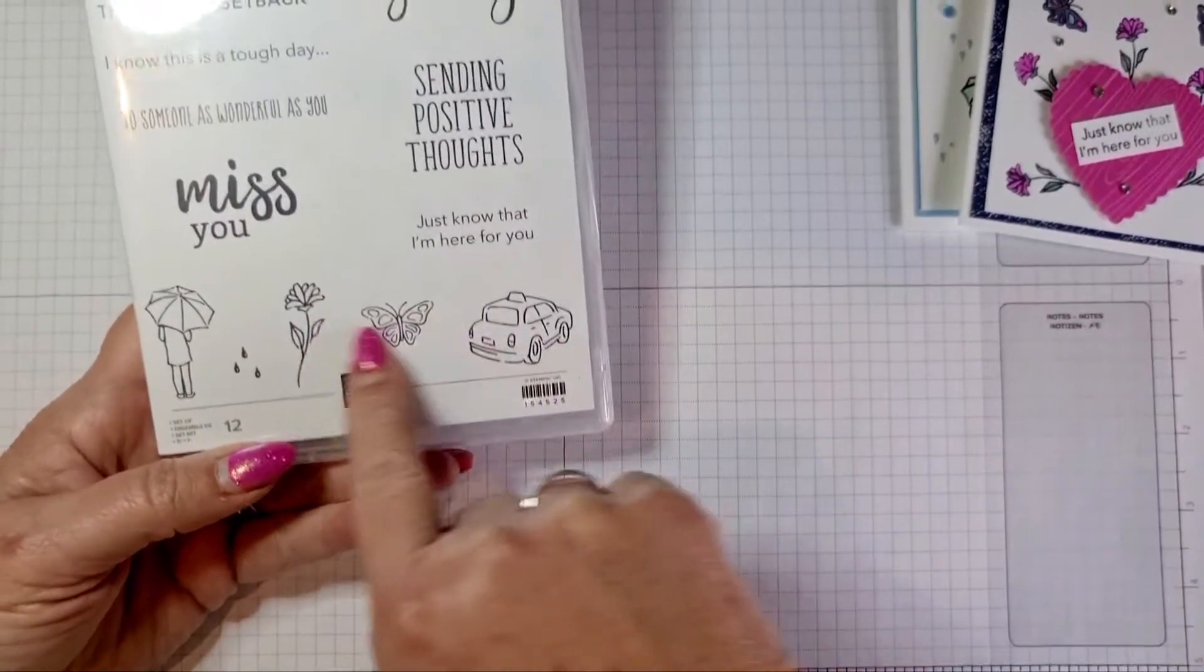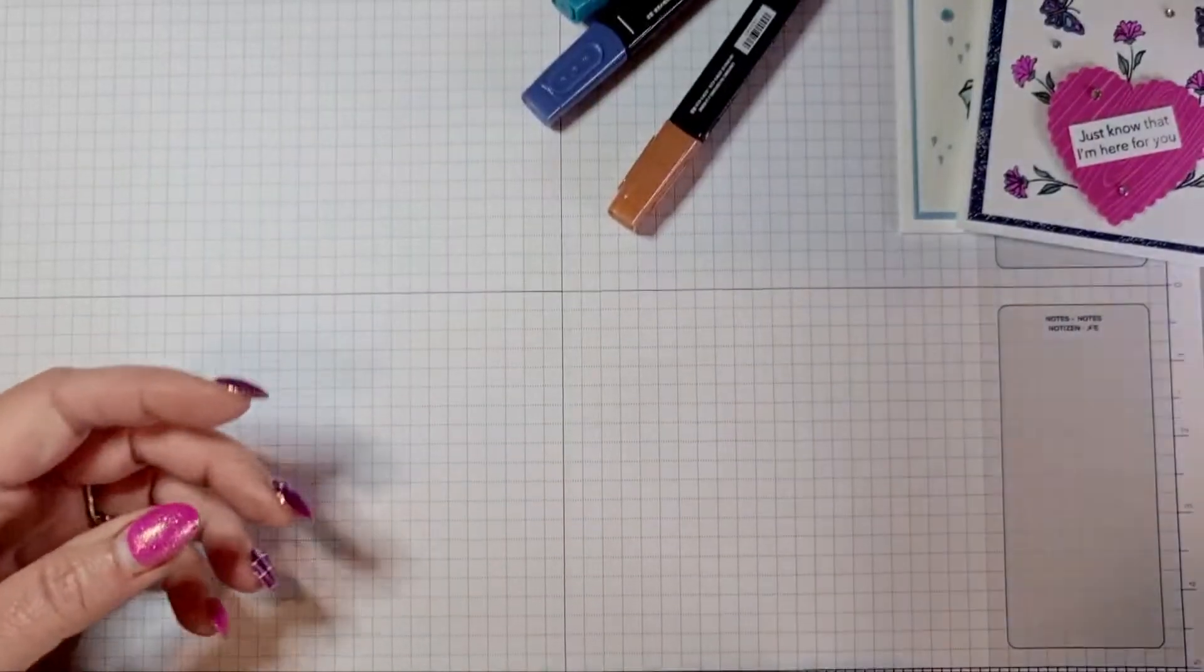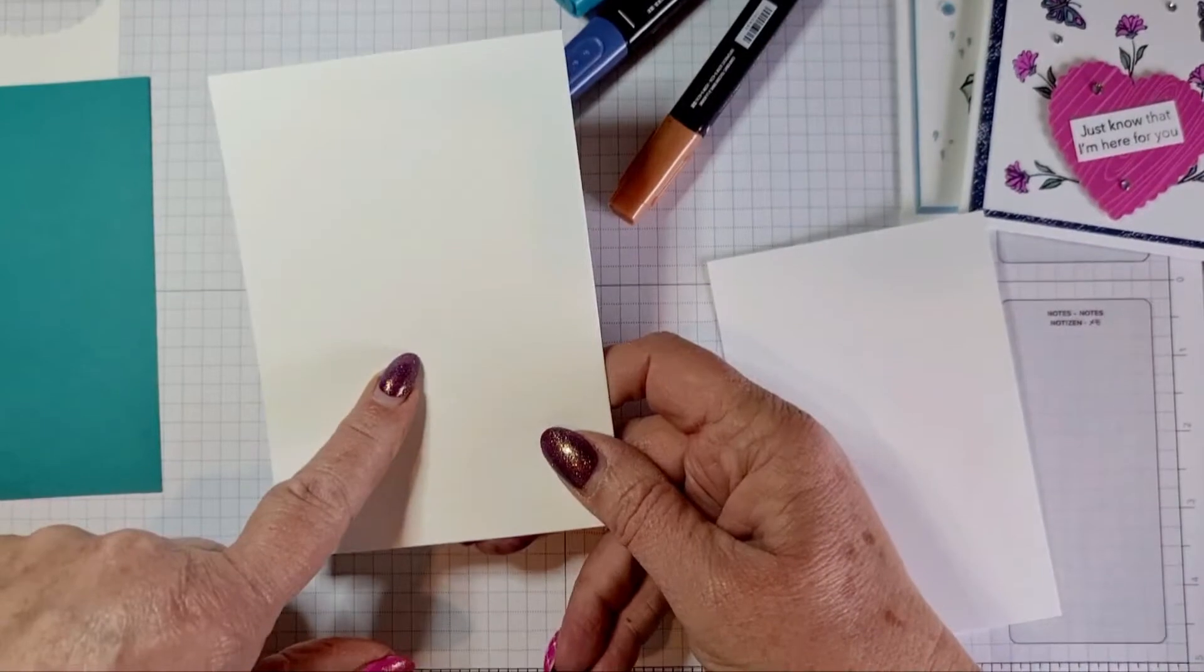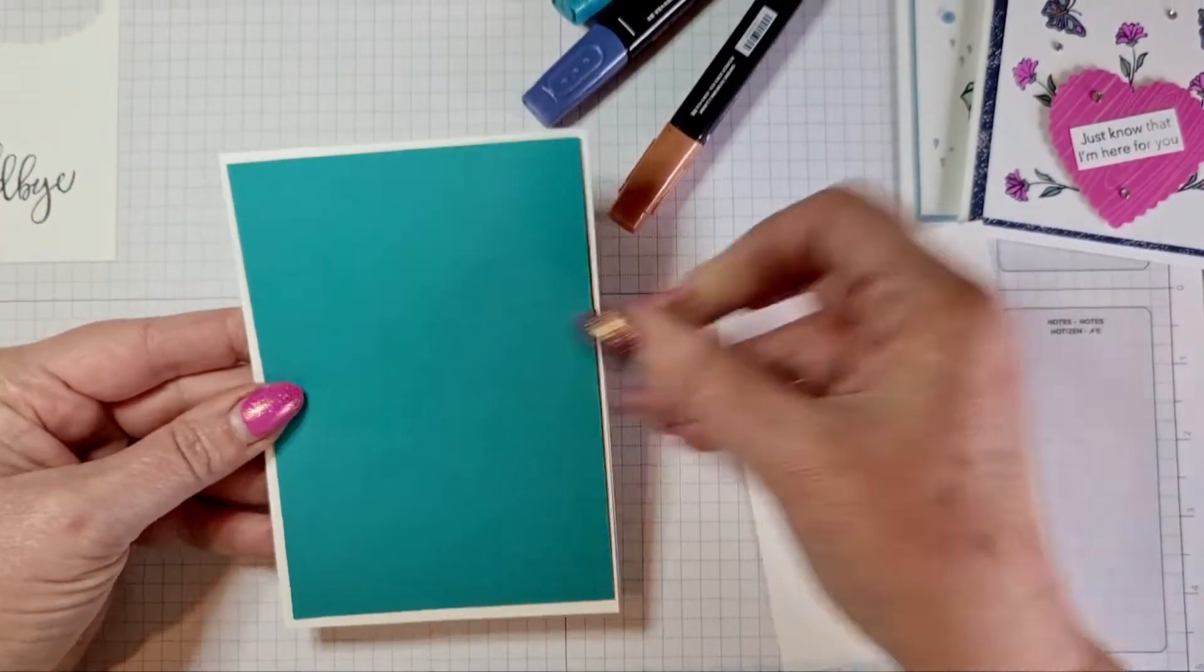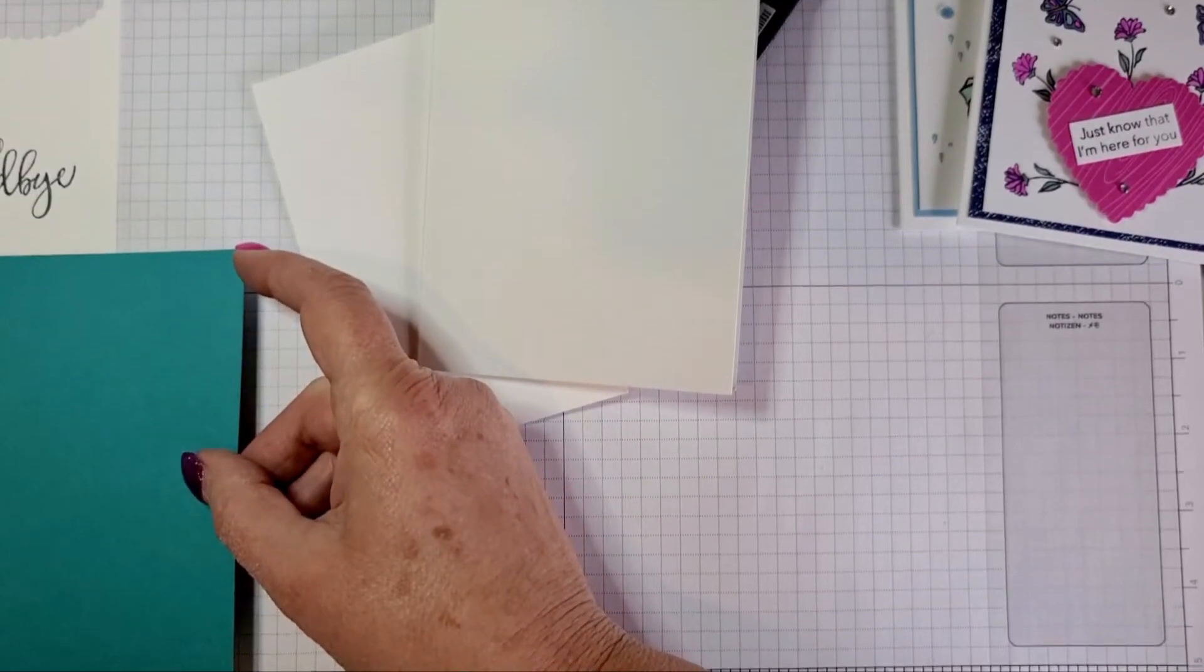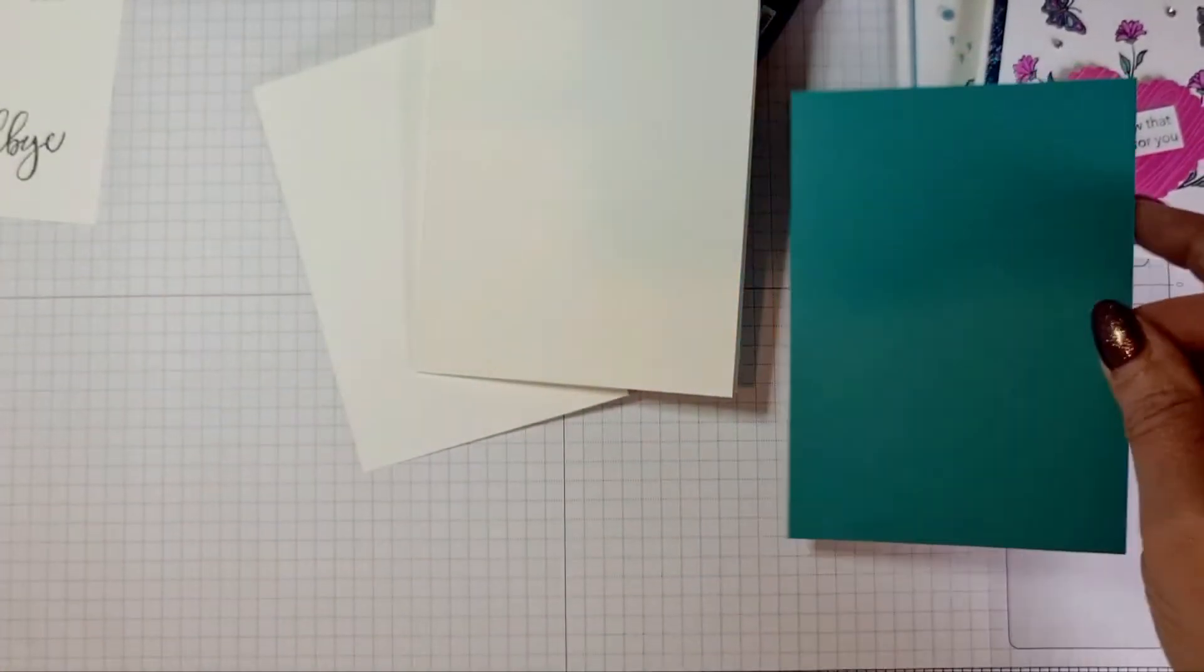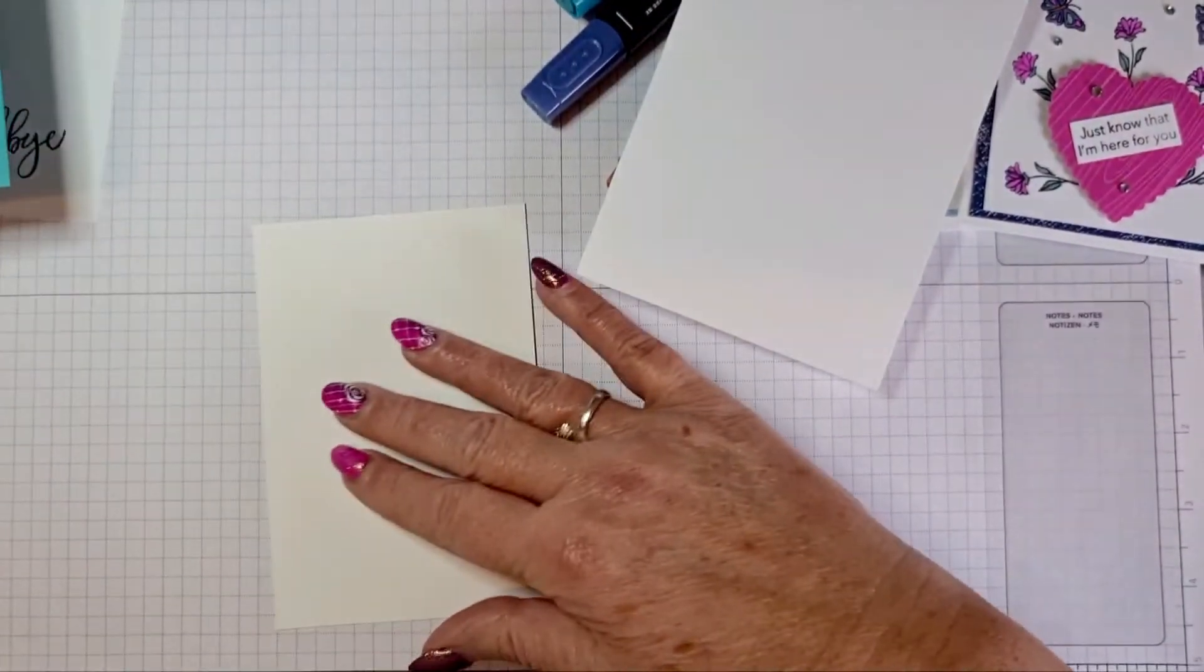I've already put my stamps on blocks and stamped the sentiments because we've got a lot of blending to do today. We have an A4 sheet cut in half, scored in half, so I've got my two card bases ready. I have a Bermuda Bay layer which measures three and seven-eighths by five and a half. My Whisper White layer is three and five-eighths by five and three-eighths. I'll trim that down after I've done my sentiments.